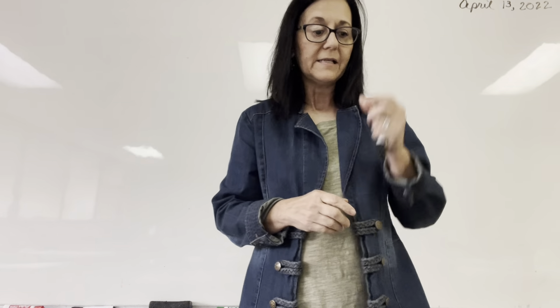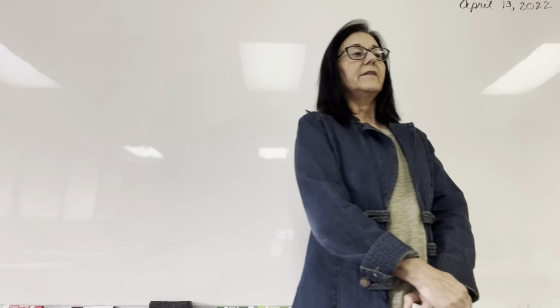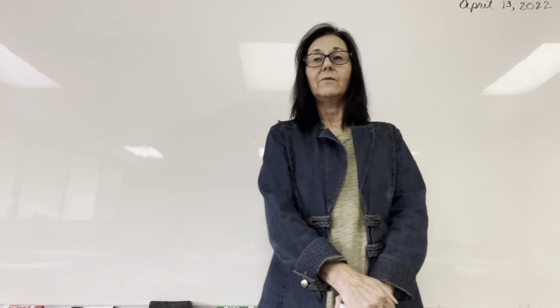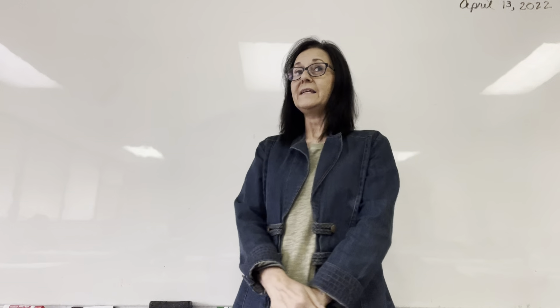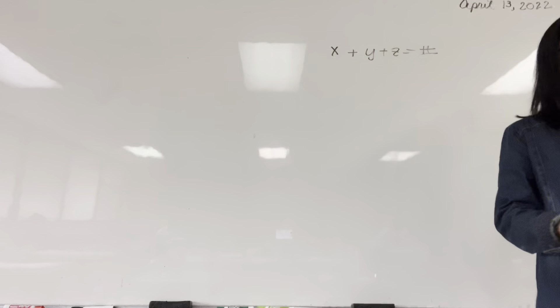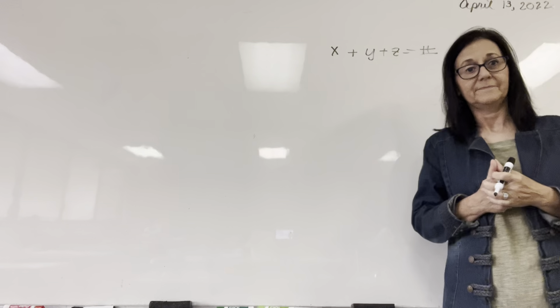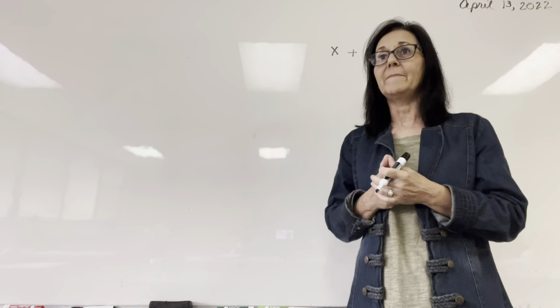This is Algebra 2, Lesson 111, and we're on page 450. So this lesson is titled Three Statements of Equality. We have worked three statements of equality before — it's looked something like: something X plus something Y plus something Z equals a number, and we've been given two other equations. So you know how to solve these problems, but we've been given the equations.